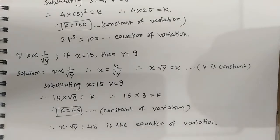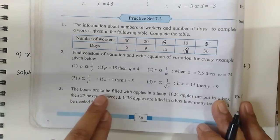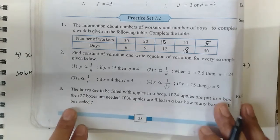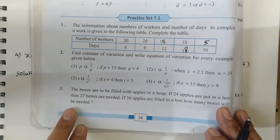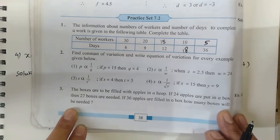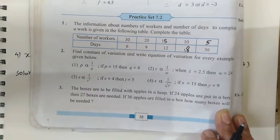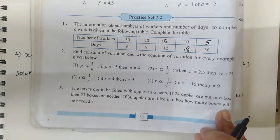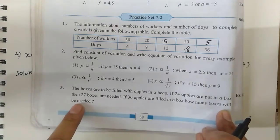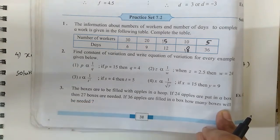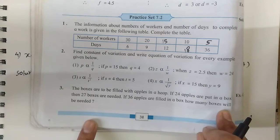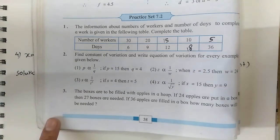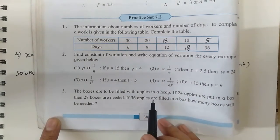Question 3: Boxes are to be filled with apples in a heap. If 24 apples are put in a box, then 27 boxes are needed. If 36 apples are filled in a box, how many boxes will be needed? The size of box is the same. When the number of apples per box is more, then fewer boxes are needed. Therefore, this is an example of inverse variation.